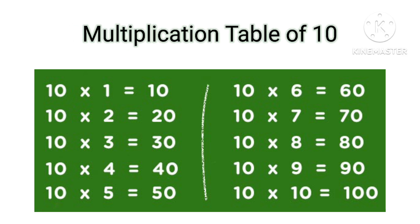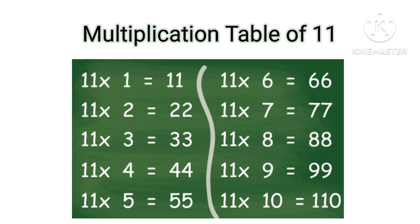Table of 10: 10×1=10, 10×2=20, 10×3=30, 10×4=40, 10×5=50, 10×6=60, 10×7=70, 10×8=80, 10×9=90, 10×10=100.